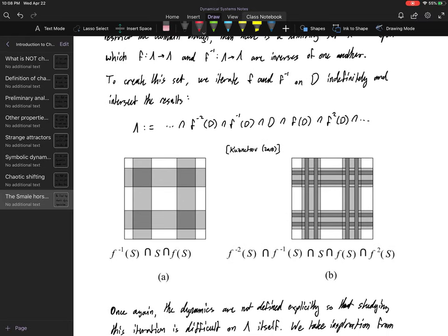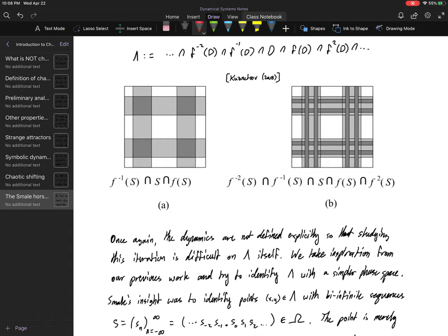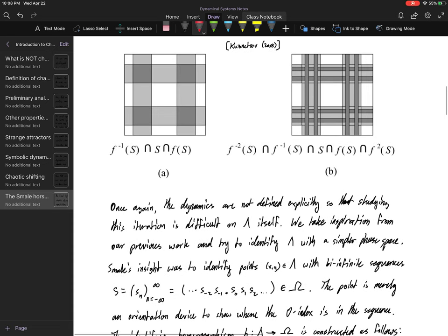Kuznetsov actually gives a really good picture of what this limiting set is starting to look like. If you just keep iterating this map over and over, you get this checkerboard pattern that intersects itself. You keep creating smaller and smaller subsets, and what you wind up with is a Cantor set—not the Cantor set, but a Cantor set. This is effectively another instance of a fractal.